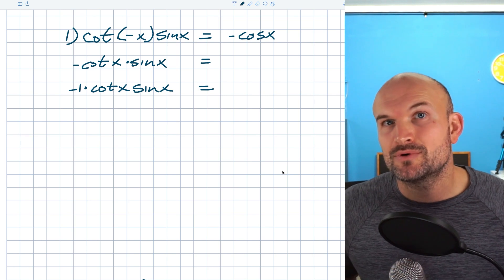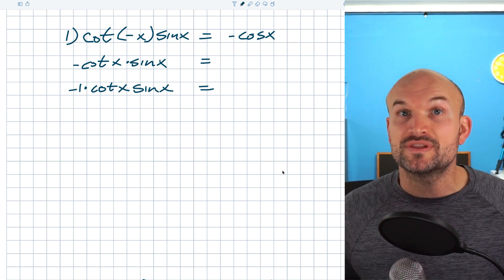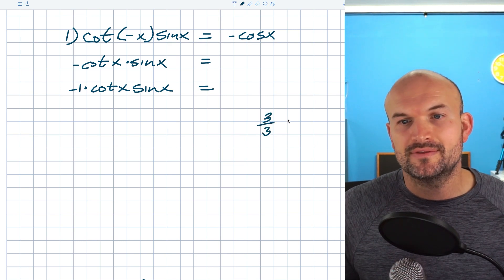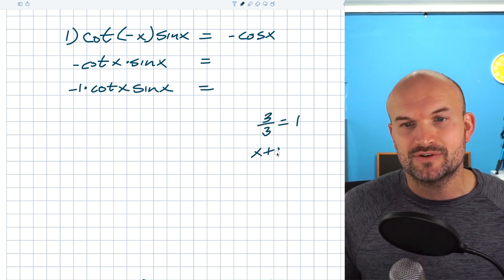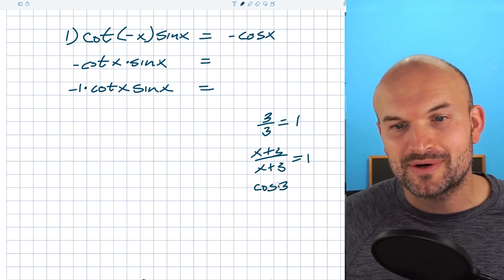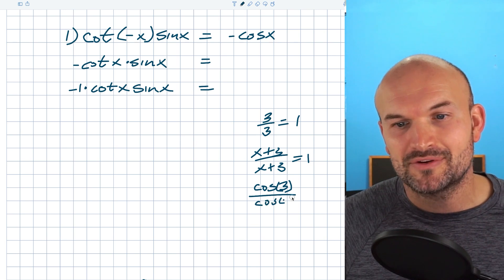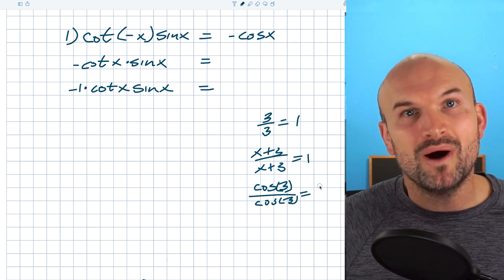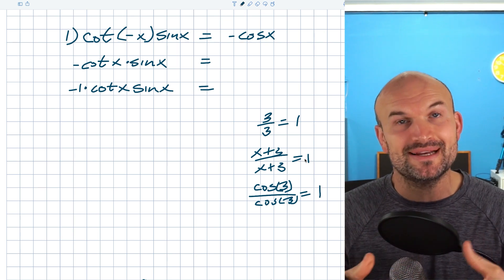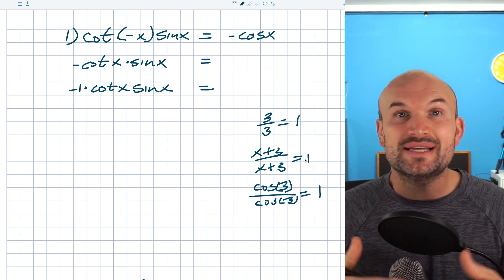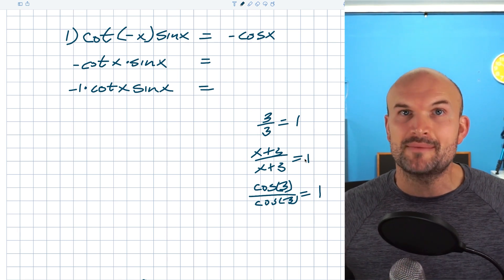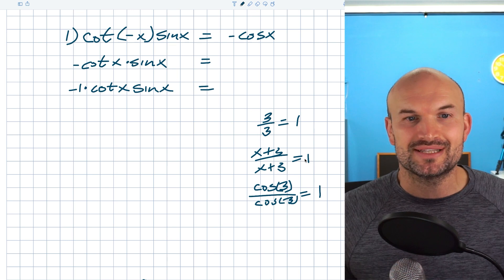The most common way we're going to want to do that is what we call the division property. Remember: if I had three divided by three, that equals one. If I had x plus three divided by x plus three, that's equal to one. Whenever you have the same term, expression, or function of the same argument in the numerator and denominator, we can go ahead and divide them out. This only works when terms are separated by multiplication.